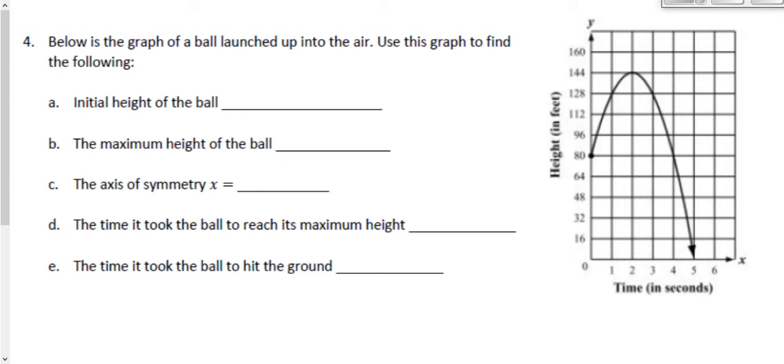In this video we're going to continue our unit 1 review about our intro to functions. In this question we'd like to identify some key features and context based on this graph. Here we have the graph of a ball being launched into the air and we want to use the graph to find the following.